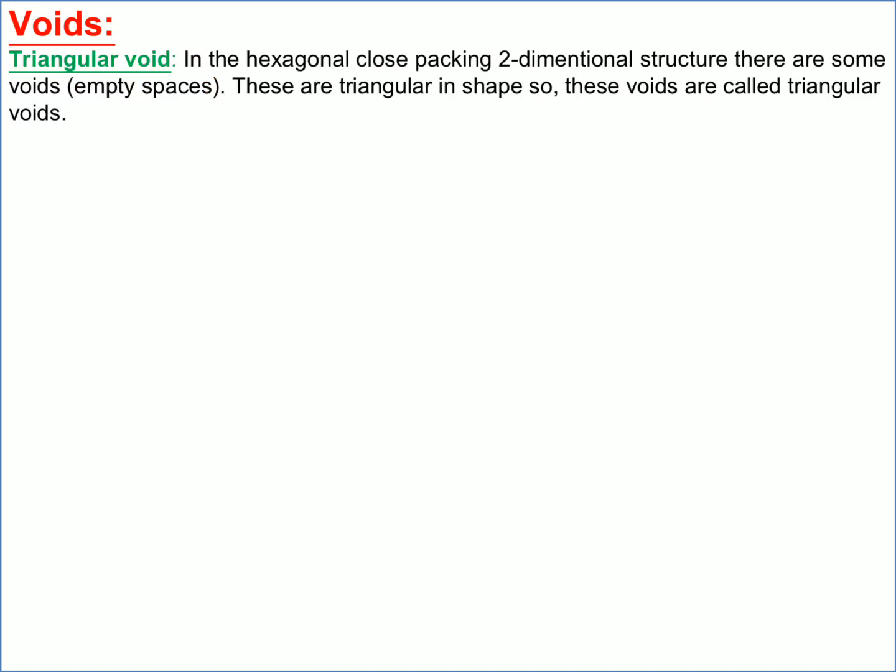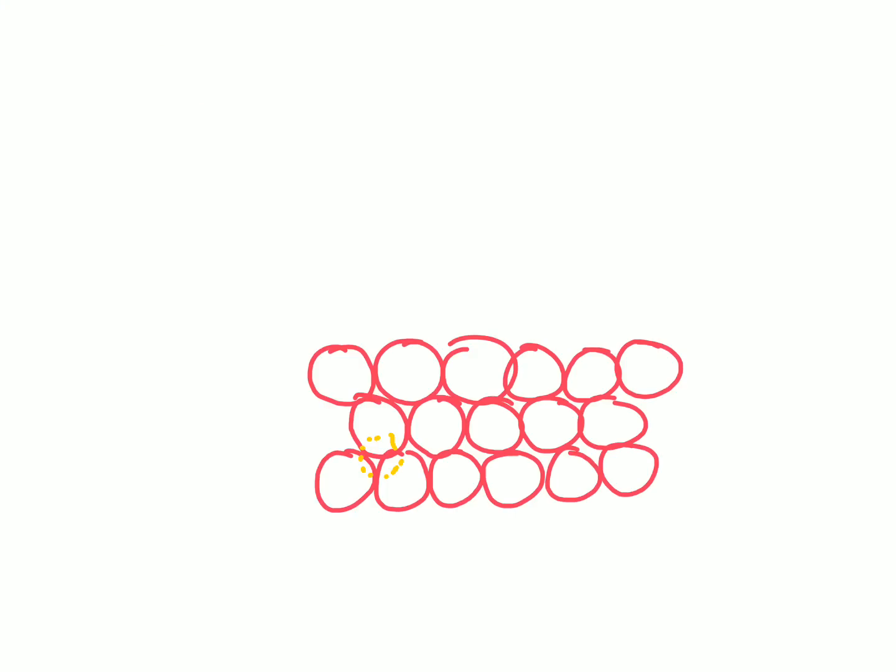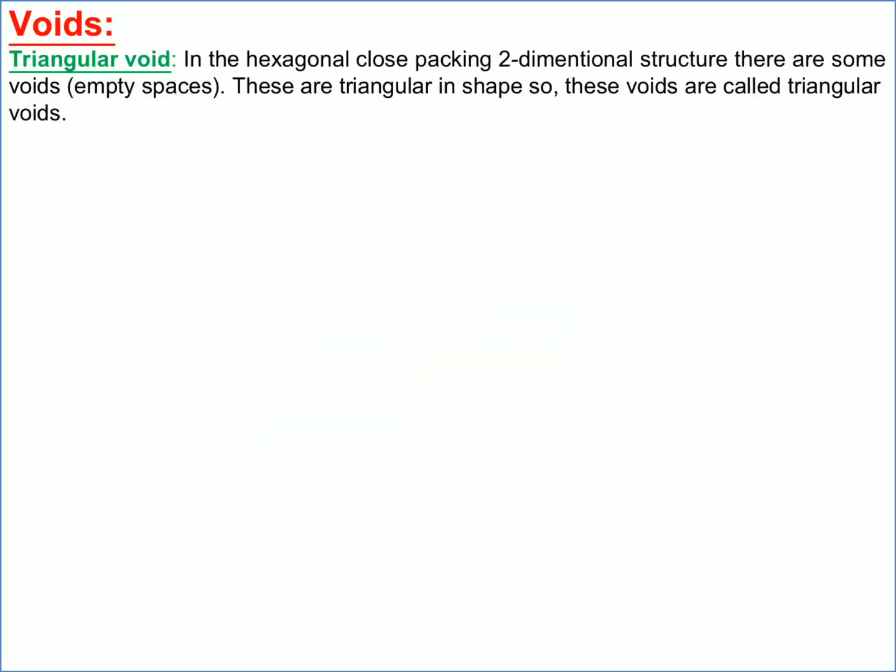Now let us learn about voids. Voids are the vacant spaces created when particles are arranged in close packing. For example, when three particles are placed together touching each other, the empty space in the middle is called a void. This space is the vacant space created by those three particles.